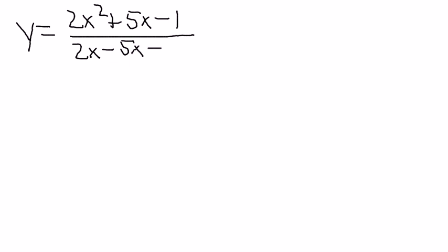So let's take a look at a question. Say y equals 2x squared plus 5x minus 1 over 2x squared minus 5x minus 3. I want to give the horizontal and vertical asymptotes of this.